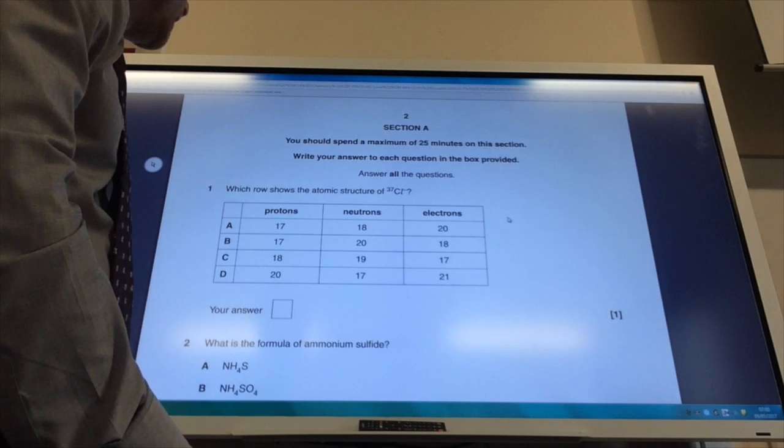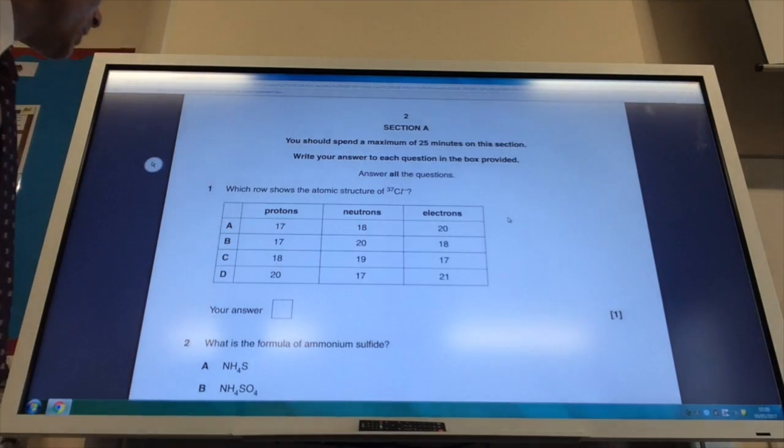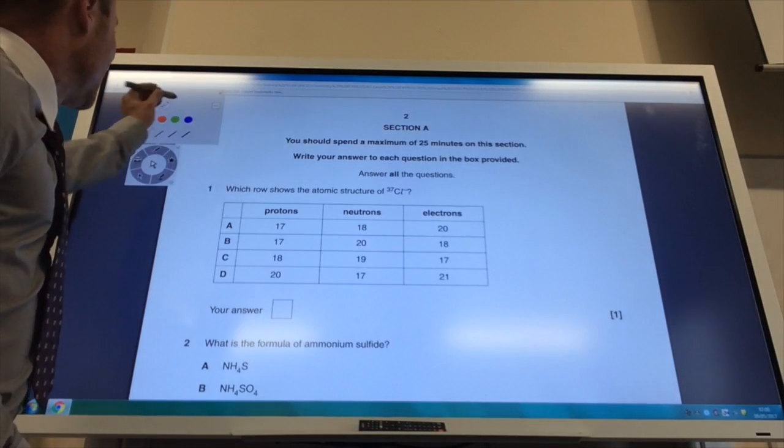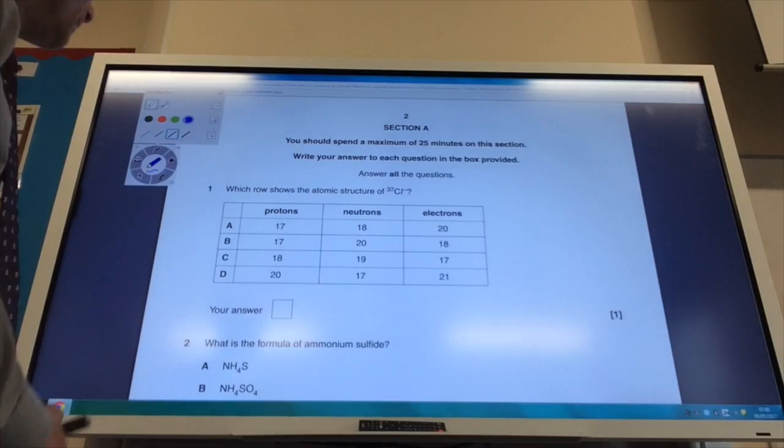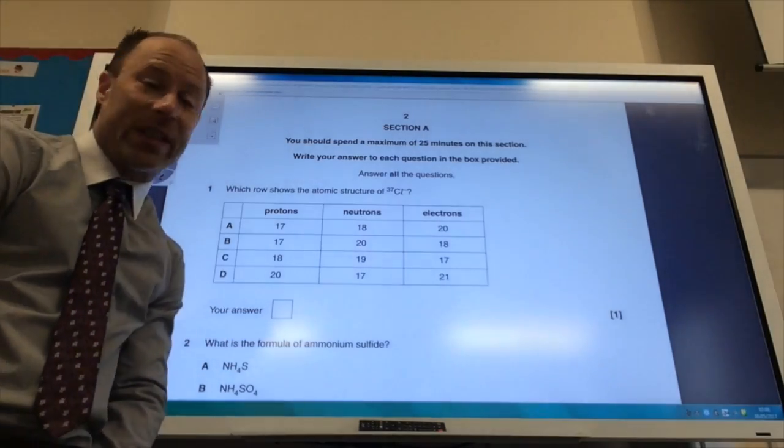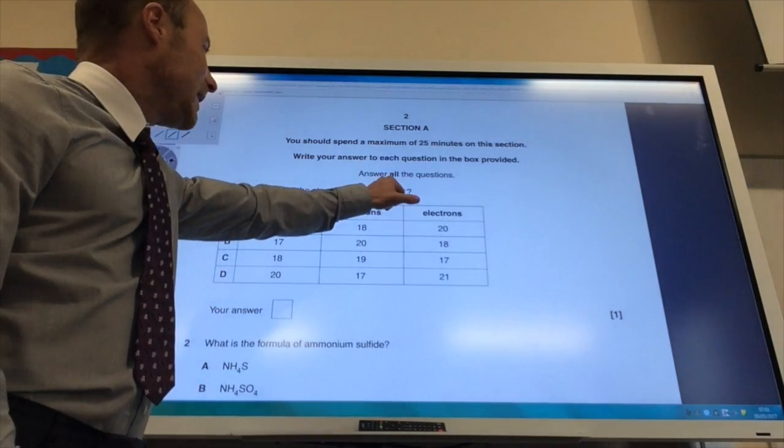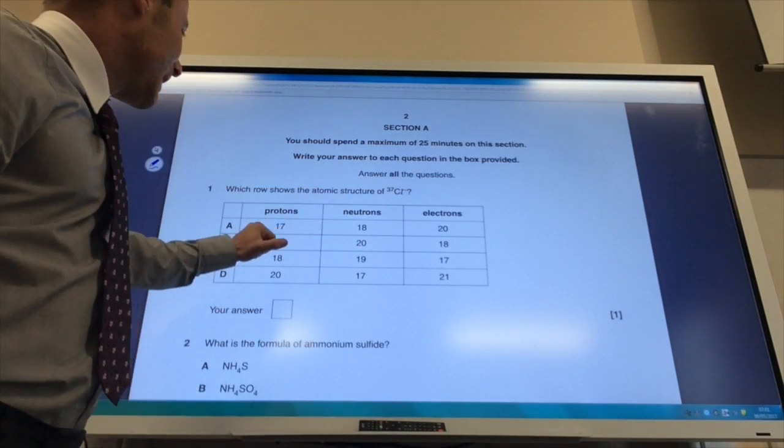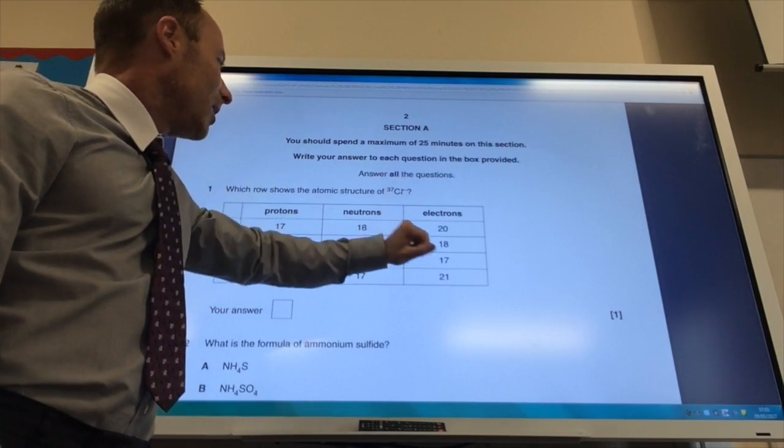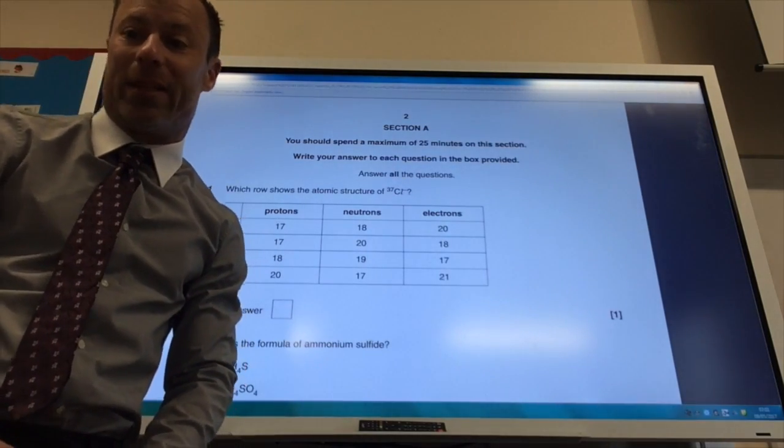We've got an isotope of chlorine and it's a chloride ion, and it wants me to find out which statement is correct. I look up on the periodic table and find that chlorine has 17 protons, so it's either going to be A or B. It's got 37 as a mass number, 37 minus 17 gives me 20 neutrons, and it's got minus ion so it must have one more electron than protons, so the answer is B.